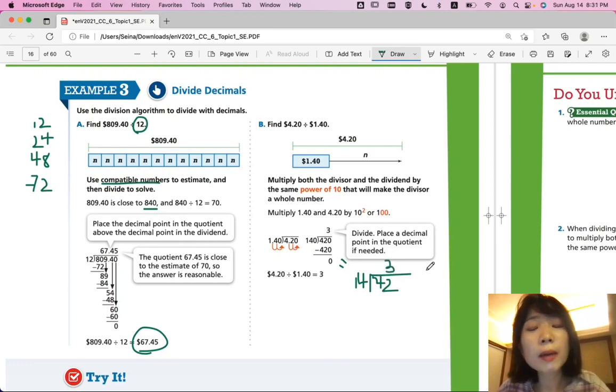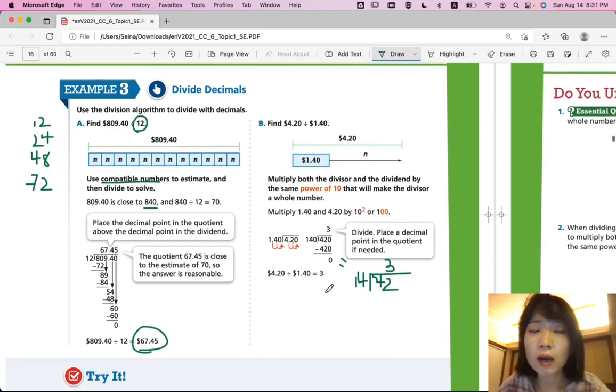But, just remember that you move the decimal place together. You cannot just move a decimal place on one number. If you put a decimal place on a divisor, you're going to put a decimal place on a dividend. So, 4.2 divided by 1.4 should be exactly 3.